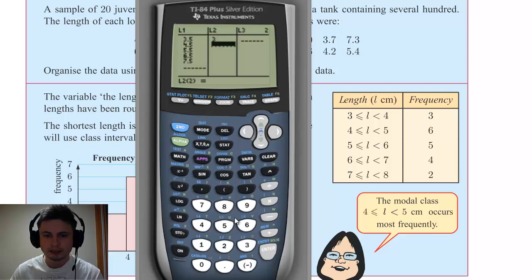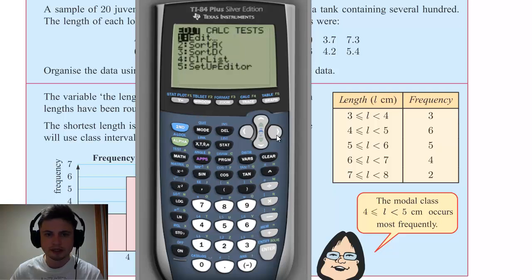Whereas if you enter values from a frequency table, it's a lot faster and it's a lot harder to make a mistake. And now I'm entering my frequency into the second column, so this is how often the number appears.